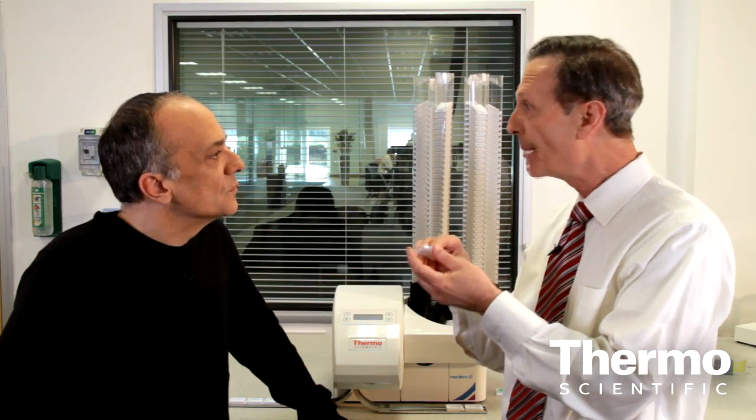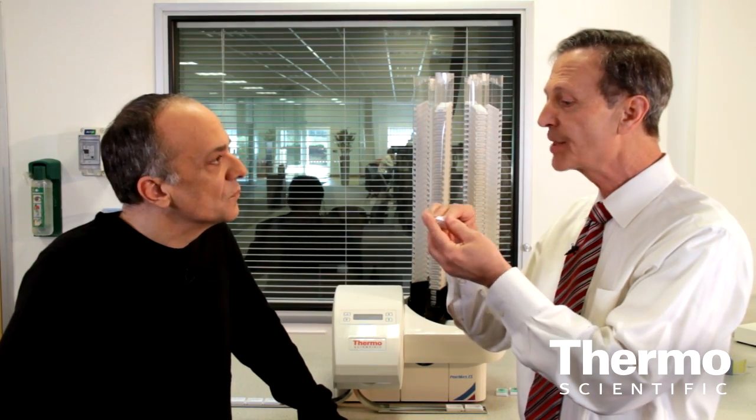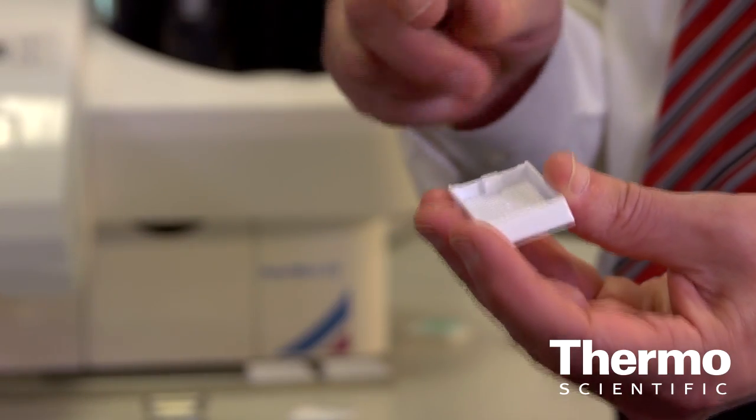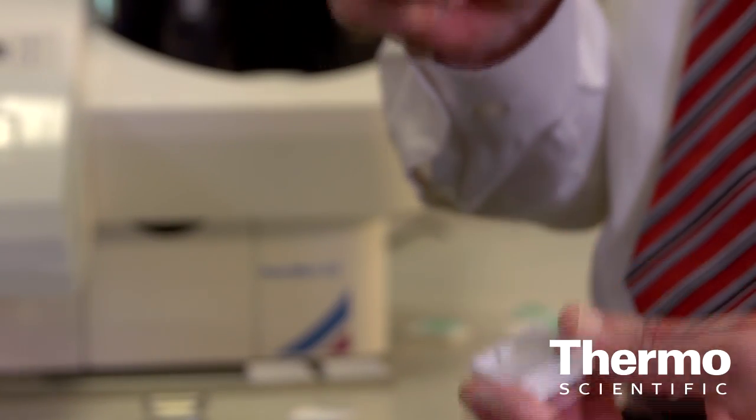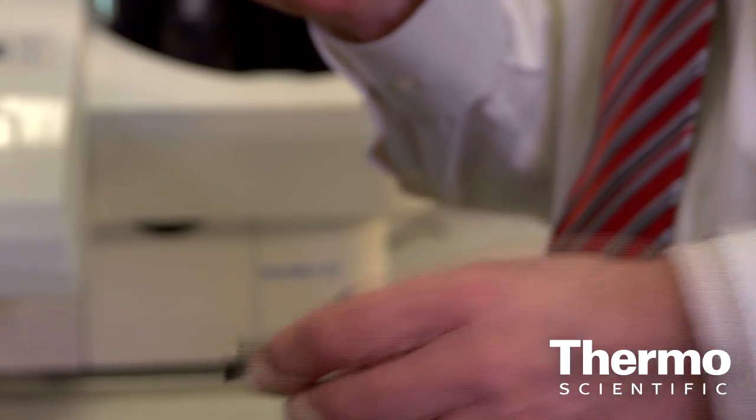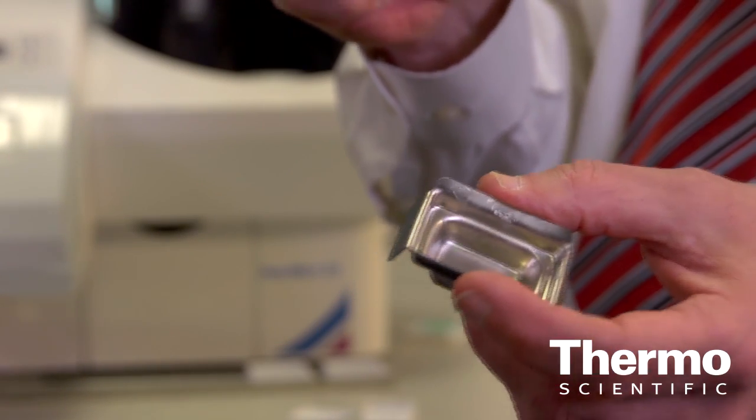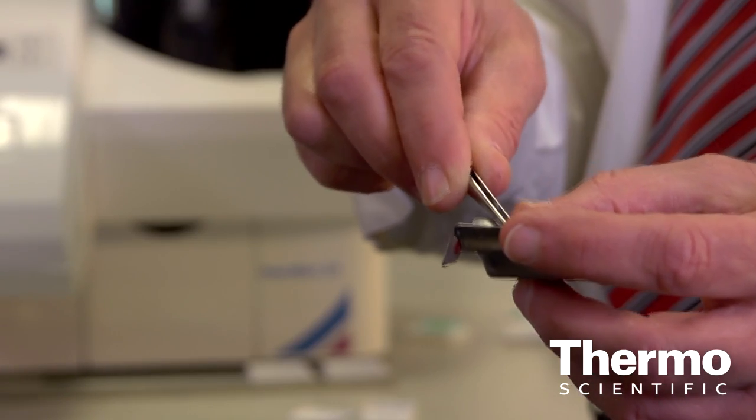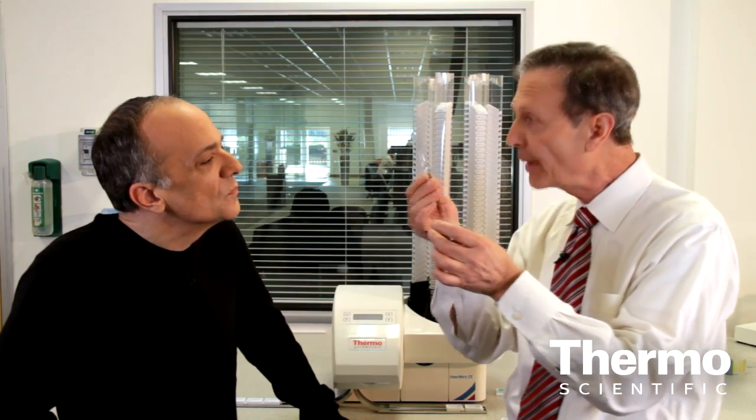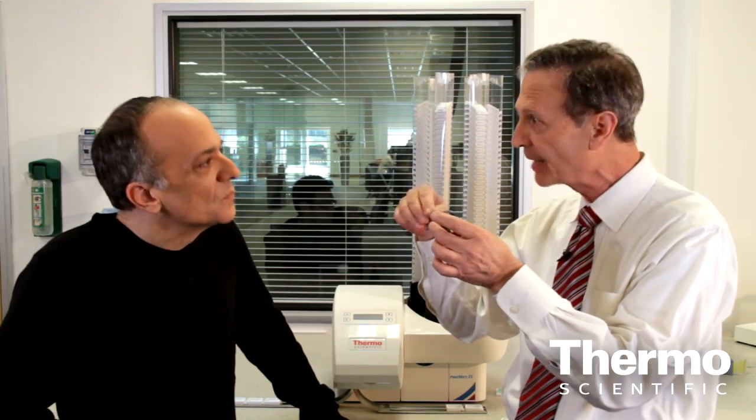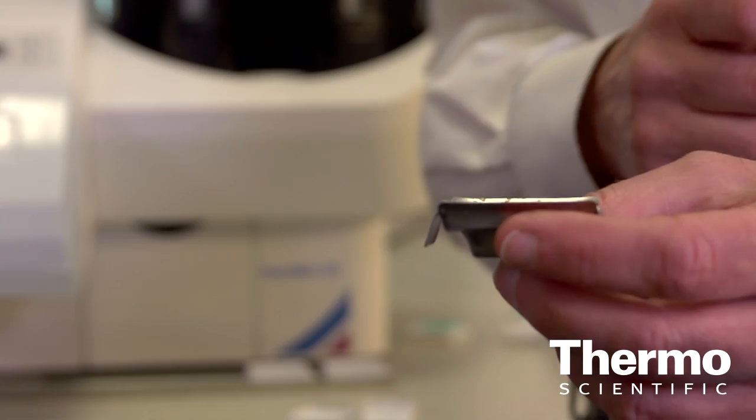The next step in the process is what's called embedding. A histotechnologist will open the cassette, take out the tissue and place it in a base mould where she has to hold it, place a small piece of wax in and then wait for the wax to solidify. The orientation is critical because the pathologist needs to see a particular slice through a particular geometry of the tissue.